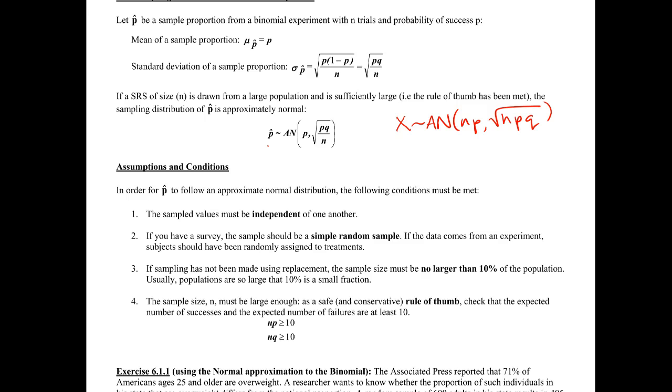So we still need our independent trials, right? Each person needs to be independent of one another, that way our probability of success stays the same for each person, or our proportion used is reasonable for each person. In order for this to be true we need to have a simple random sample.